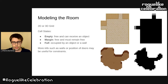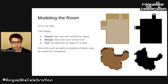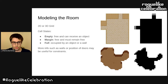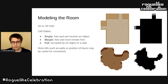Now let's see how to model the room. The room is represented as a 2D or 3D grid — a 3D grid can be useful even for a 2D game. In my game I use a 3D grid with three layers to place objects above others. Cells in this grid can be in three states: empty (black tiles), which are free and can receive an object; margin (gray tiles), which are free but must remain free for gameplay purposes like keeping connections to other rooms accessible; and full (white tiles), when a cell is occupied by an object or wall. We may also add more data to a cell, like marking it as a wall or door, which can be useful for certain constraints.